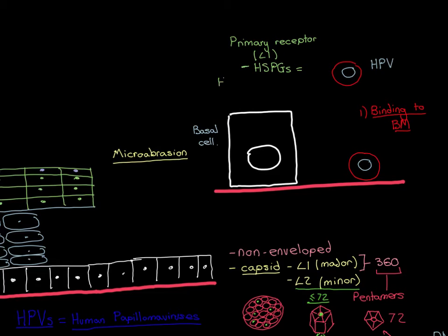The primary receptor that L1 binds to is present in both the basement membrane and on the surface of the basal cells. We believe — and we have quite a lot of confidence in this — that the primary receptor is heparan sulfate proteoglycans, abbreviated to HSPGs.